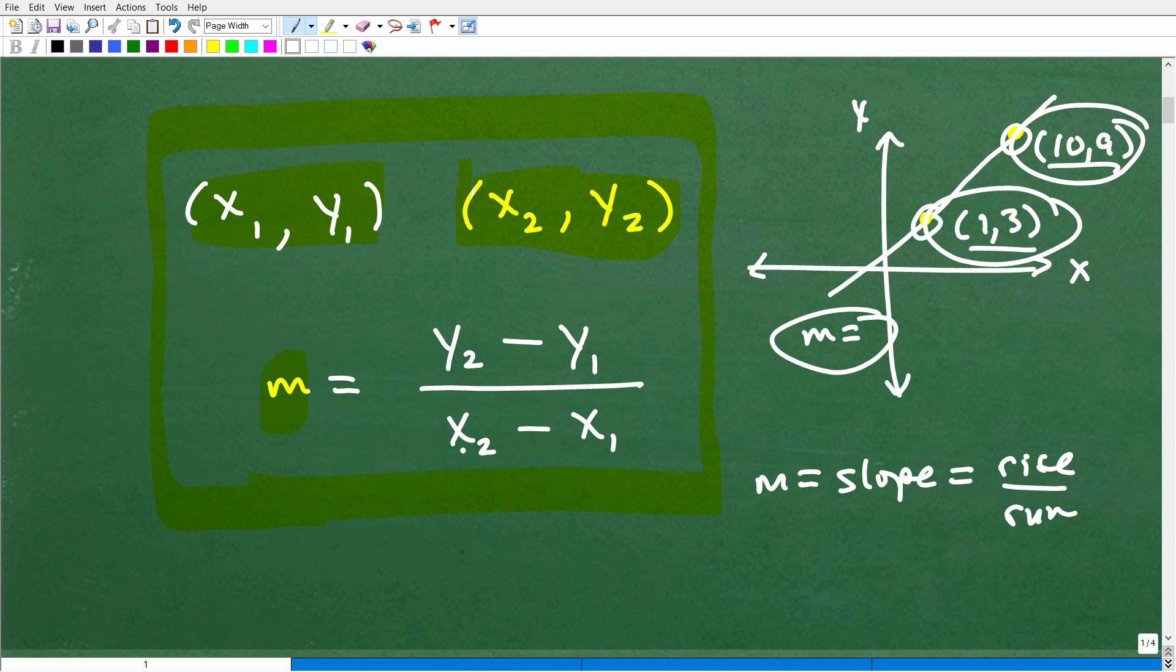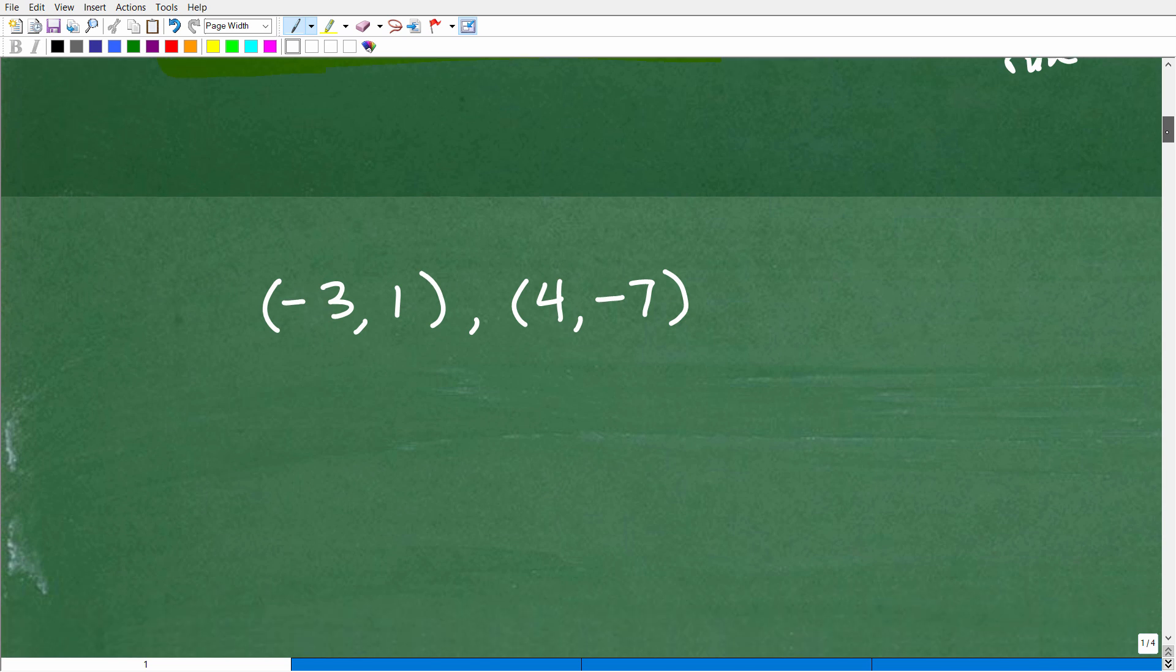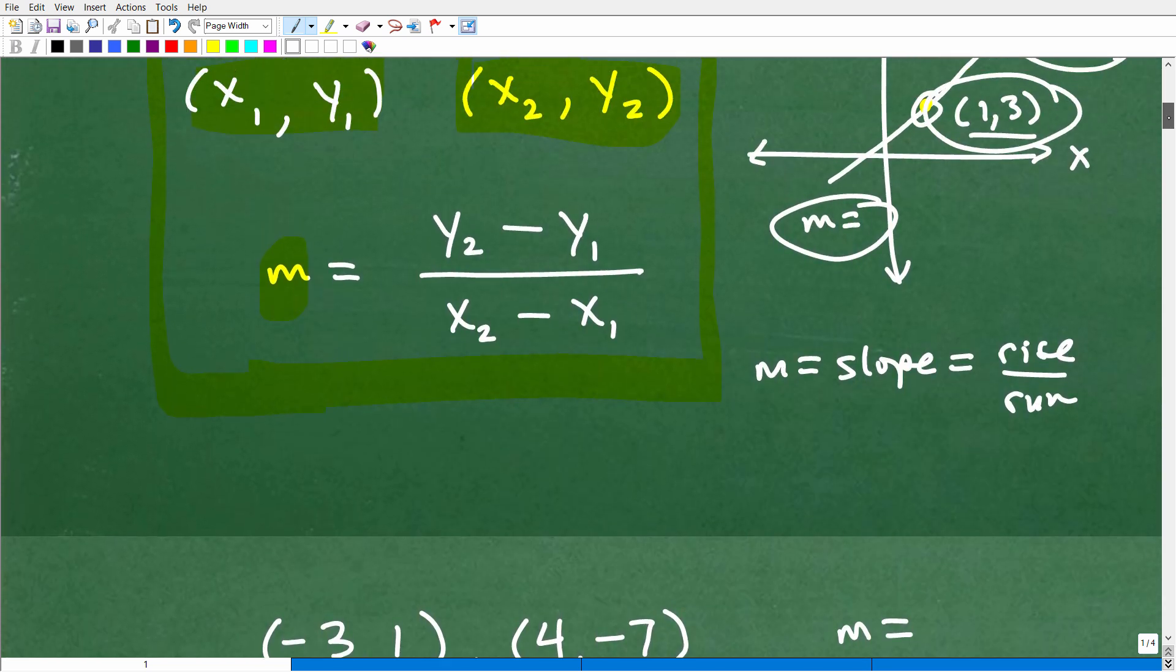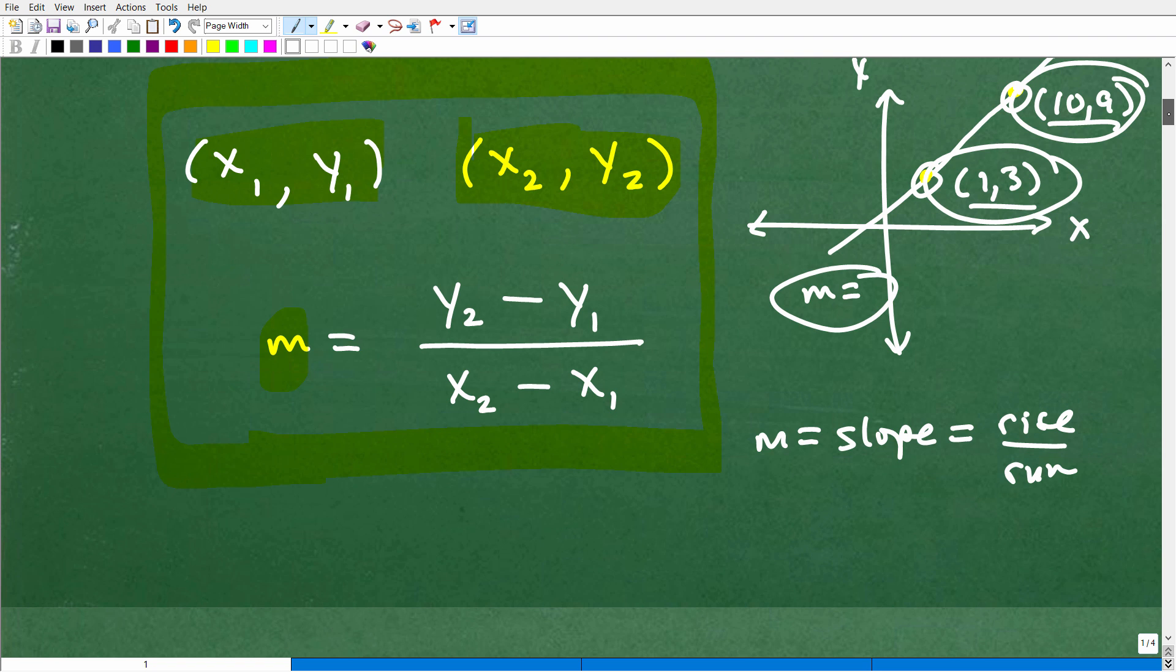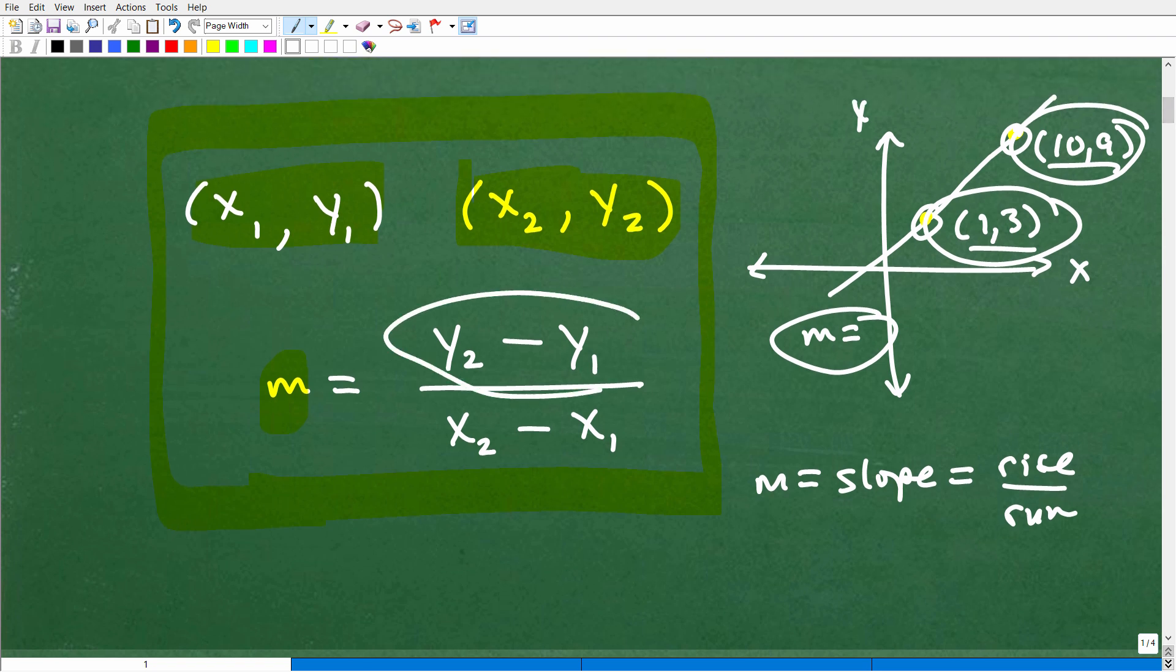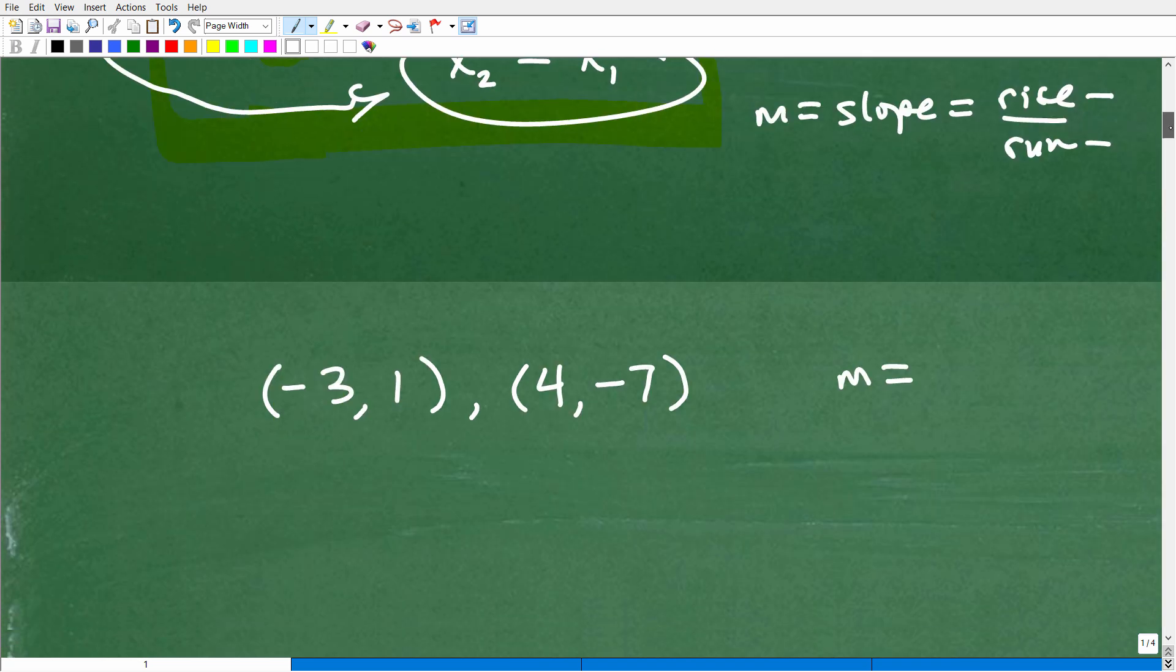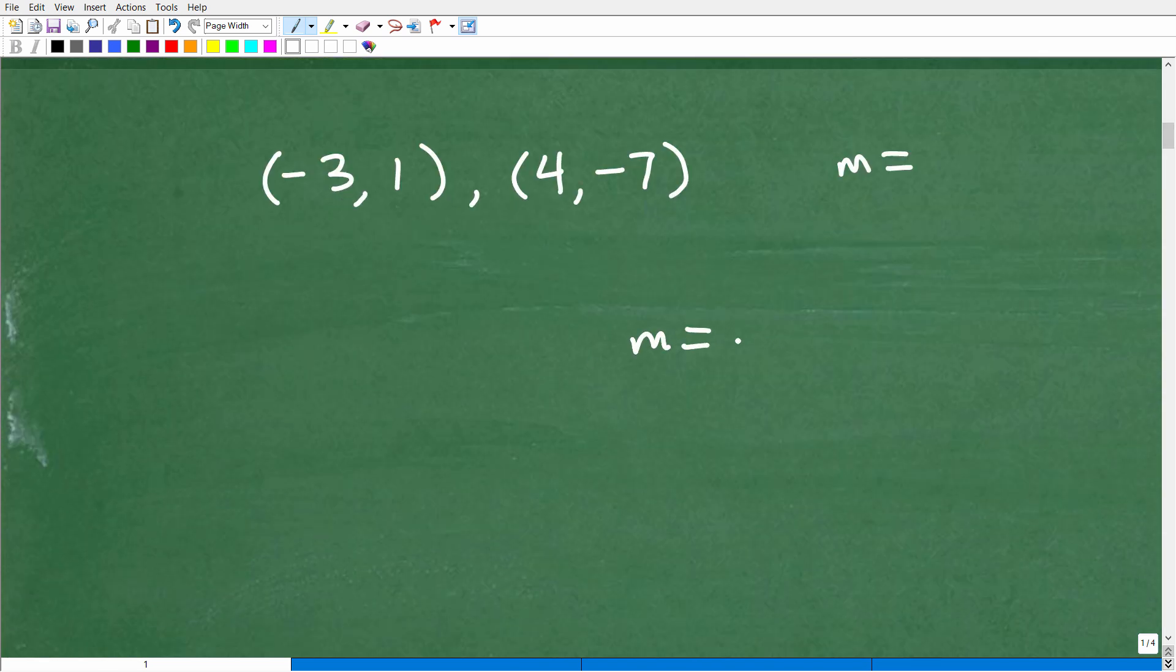All right, now, I'm going to show you the problem here. Here is the formula. I want you to calculate the slope. And here is the formula to do so. Let's take a look at the formula real quick. So it looks like we're going to subtract the y's. Because here is the y's, and here is the y's. So we're going to subtract the y's. That will be our numerator. And then we're going to subtract the x's. And that will be our denominator.